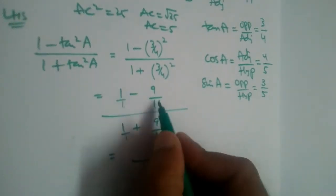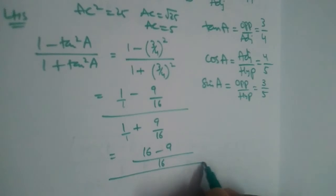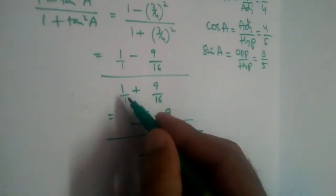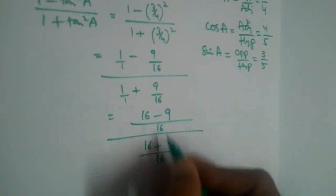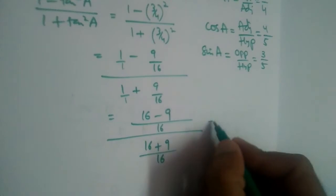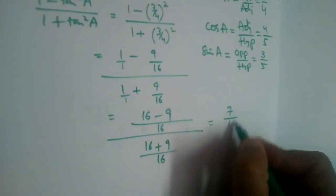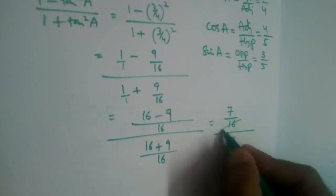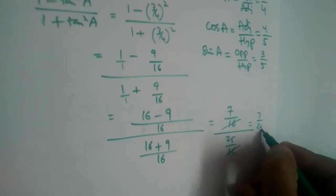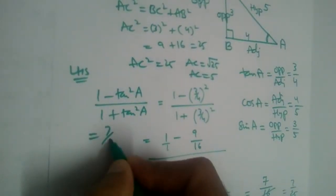Simplifying the denominator: (16 + 9)/16 = 25/16. So LHS = (7/16) / (25/16). The 16s cancel, giving us 7/25. So the LHS value is 7/25.